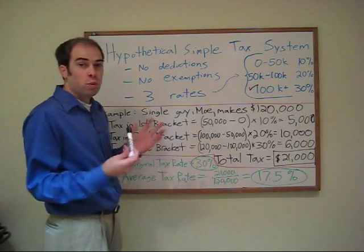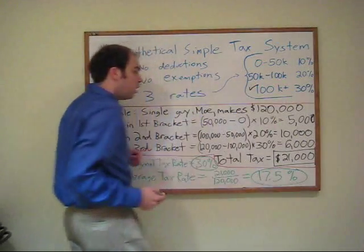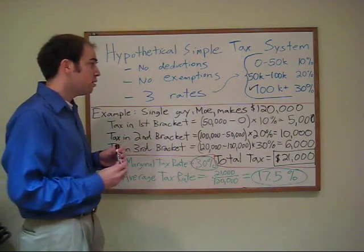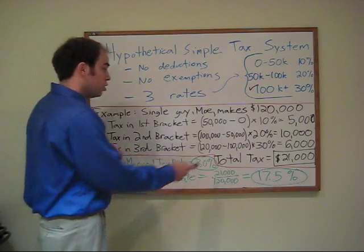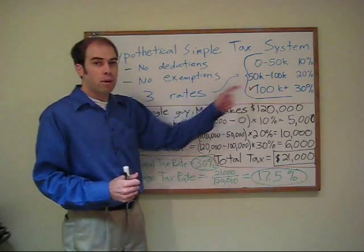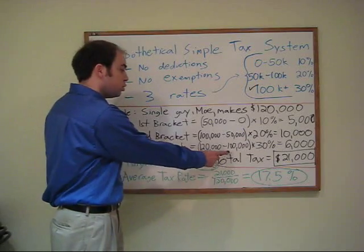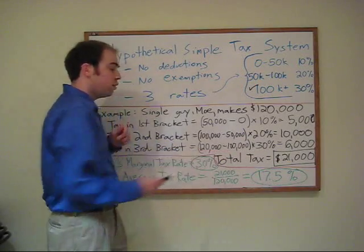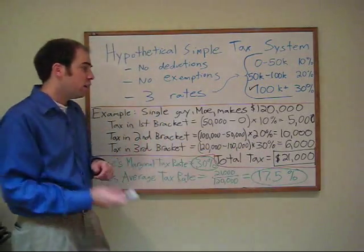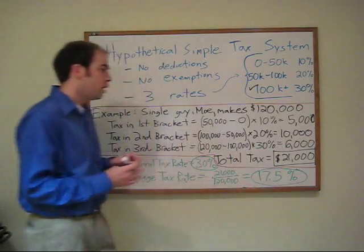The third bracket, which is the one he's in, means all the income earned beyond $100,000 — which for Moe is $20,000 — is taxed at a 30% rate. So $120,000 minus where that bracket kicks in, which is $100,000, gives you $20,000. Multiply that times the marginal tax rate of 30%, which gives you $6,000.